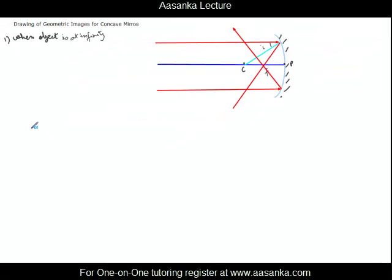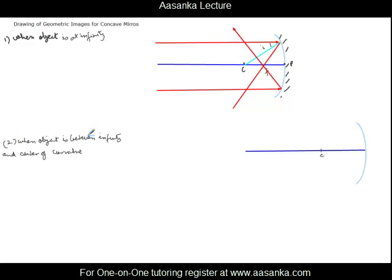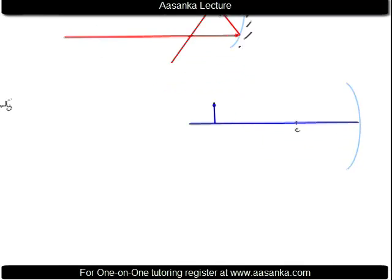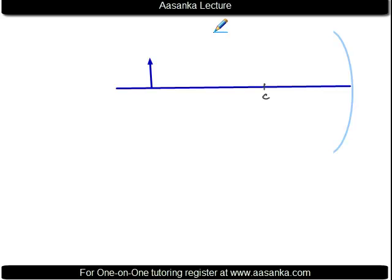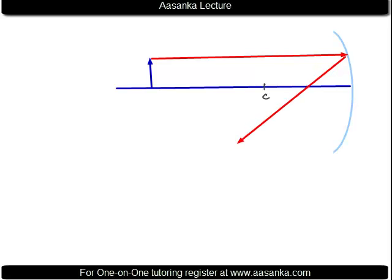The second case is when the object is between infinity and center of curvature. We draw an extended object somewhere between these two positions and examine the ray diagram to locate the image. We almost always take one ray which is parallel to the principal axis, and we know it will pass through the focus after reflection. So this first reflected ray passes through the focus on the principal axis.